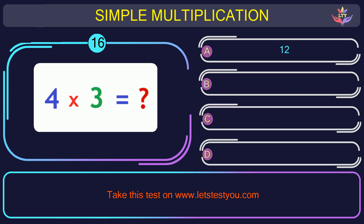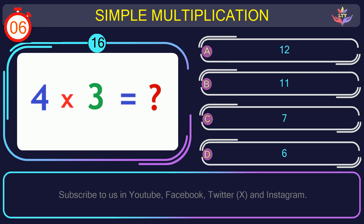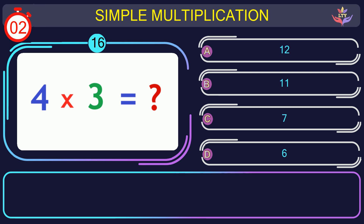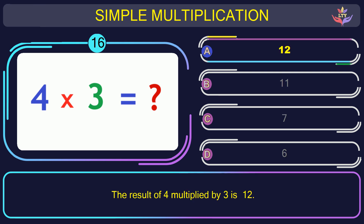Question number 16: calculate the result when you multiply 4 and 3. The correct answer is option A: 12. The result of 4 multiplied by 3 is 12.